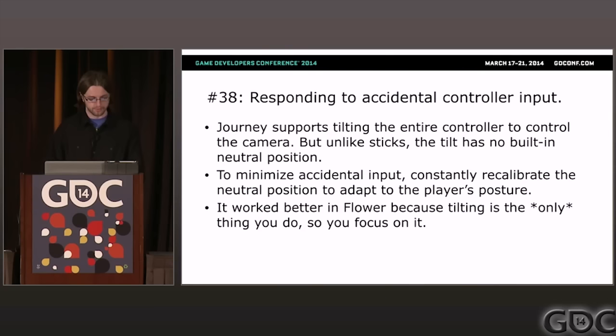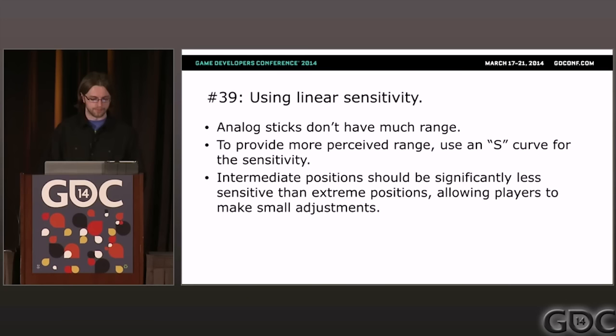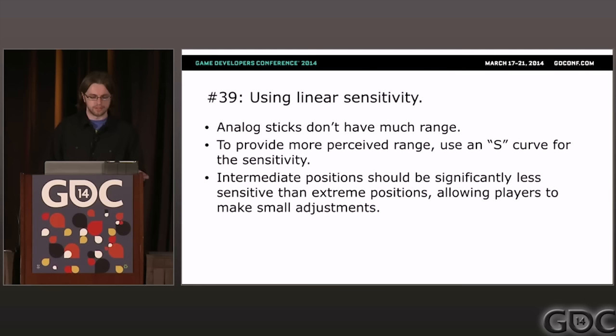Problem thirty-nine: using linear sensitivity, especially on the analog stick. Analog sticks don't have much range, and players have a tendency to push the stick all the way. It would be nicer to provide a very slow intermediate way to control the camera for fine-tuning direction. You can do this by stretching the input axis from the analog stick into an S-curve that reduces the sensitivity around the neutral positions.